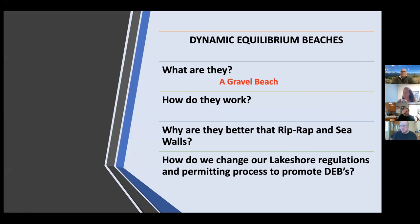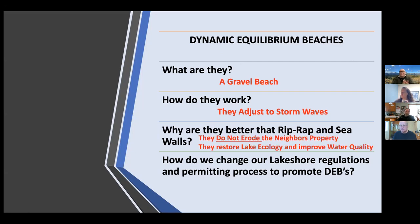So what are they? Well, basically a gravel beach. All beaches can be dynamic in their behavior and in some sort of a dynamic equilibrium state where they've changed shape, but over a long time. The key is that they adjust to storm waves. The reason they're better than riprap and seawalls is they do not cause erosion to the neighbor's property and they help restore lake ecology and improve water quality.